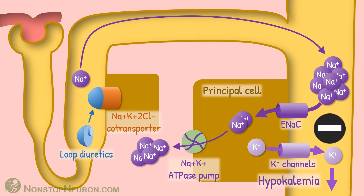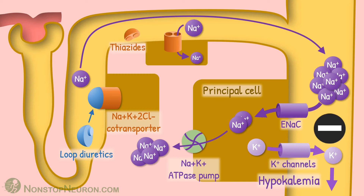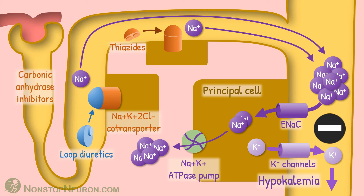This is how loop diuretics cause hypokalemia. The same mechanism applies to all diuretics that increase the sodium load reaching the collecting duct. For example, thiazide diuretics — they inhibit sodium reabsorption at the distal tubule, which also increases sodium load reaching the collecting duct and eventually causes hypokalemia. The same applies to carbonic anhydrase inhibitors as well, which work at the proximal tubule.